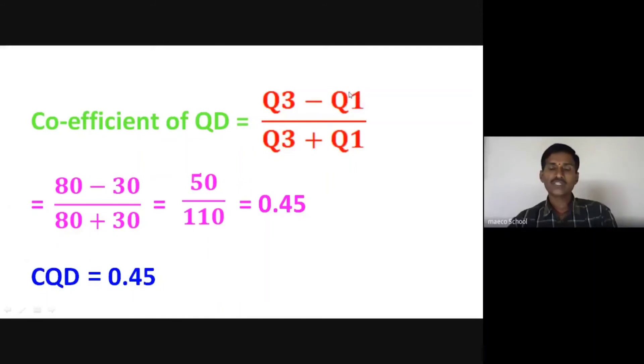Q3 is 80 and Q1 is 30. So we have 80 minus 30 divided by 80 plus 30. 80 minus 30 is equal to 50. 80 plus 30 is equal to 110. So the coefficient of quartile deviation is 50 by 110.